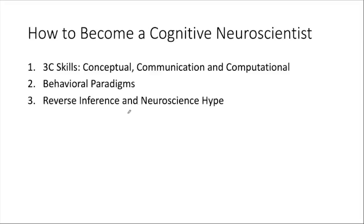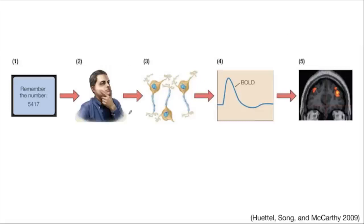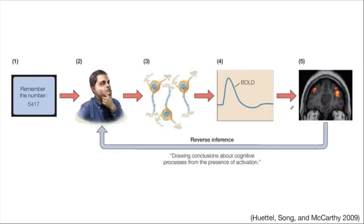The third issue is being careful about what we call reverse inferencing. In cognitive neuroscience, we give people a task, they work on it, there is a BOLD response, and we get an activation map. Reverse inferencing is seeing that activation map and concluding that the subject must be performing a specific cognitive process or paradigm — and this can be very problematic.